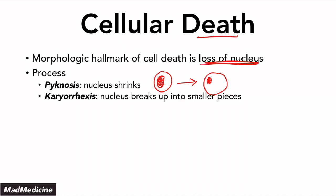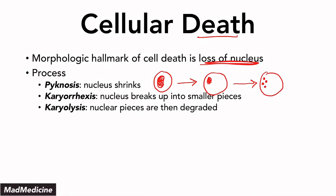Then you have karyorexis, in which that shrunken nucleus breaks up into smaller little pieces. And finally, you have karyolysis, in which the nucleus that has been broken into smaller pieces essentially gets degraded, leaving barely any nuclear remnants that you can see. That is the main process of cellular death.